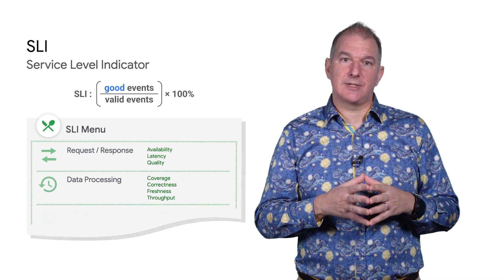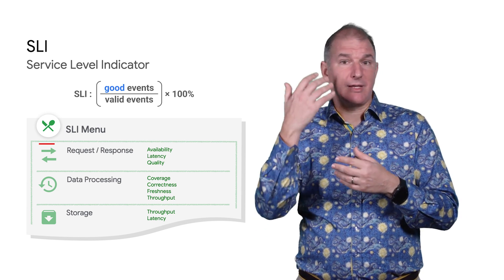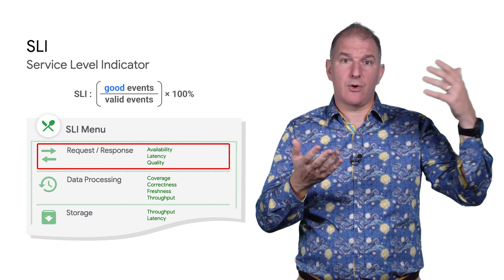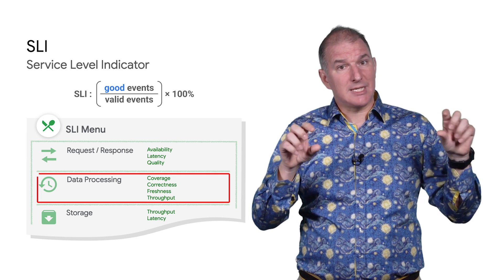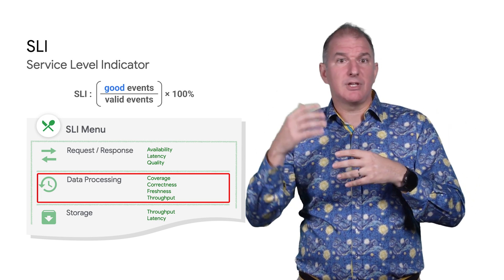Let's delve into it. An SLI is a measure of how reliable a service is. For example, if your service provides an API, you may choose latency or availability. But for a data processing pipeline, you may look more at data freshness or throughput.